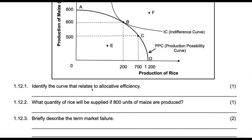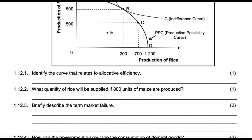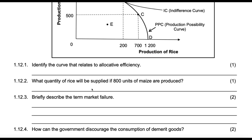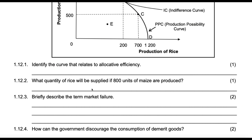Briefly describe the term market failure. It is failure of markets to allocate resources at an optimum level.